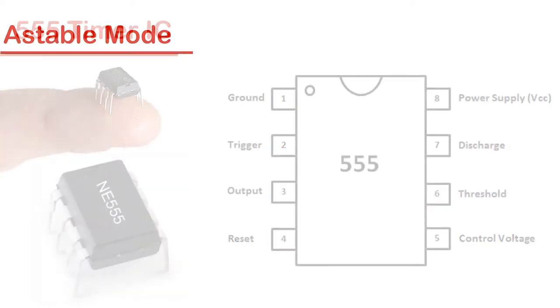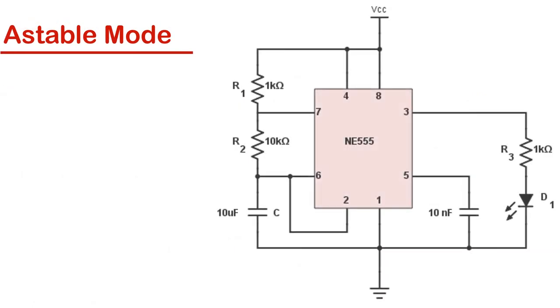Astable mode of 555 timer IC is also called free-running or self-triggering mode. It doesn't have any stable state, it has two quasi-stable states: high and low.